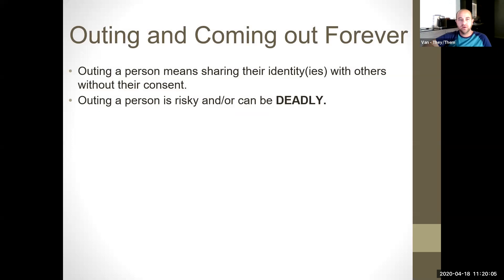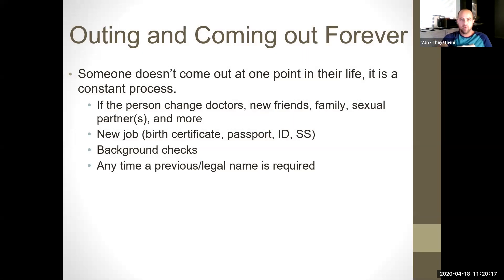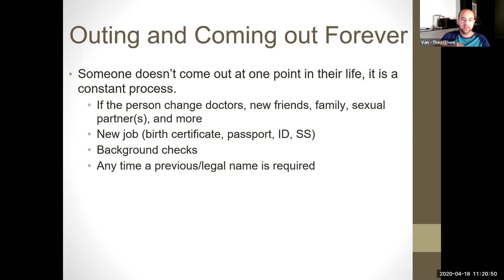Outing a person means sharing their identity or identities with others without their consent. Outing a person is risky and/or it can be deadly. There's this idea that somebody just comes out at one point in their life and then it's done, but coming out is a constant process. If the person changes doctors, makes new friends, has new family members, sexual partners, and more. If you get a new job, they often ask for a birth certificate, passport, ID, or social security card, or ask in background checks if you've ever used any previous names — anytime a previous legal name is required.